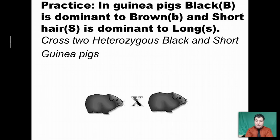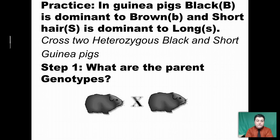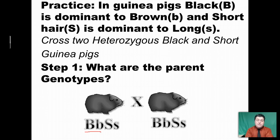To be heterozygous for black, you need one dominant and one recessive allele. To be heterozygous for short, you need one dominant allele for short hair and one recessive long hair gene. So you're heterozygous for both traits — you have one dominant and one recessive allele for each. And since both parents have the same genotype, which gives them the same phenotype, that's going to be the genotype of the other parent as well.